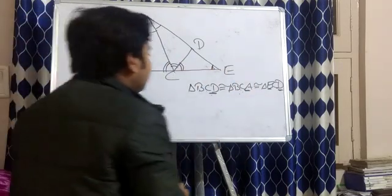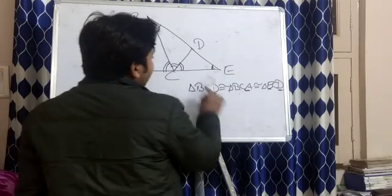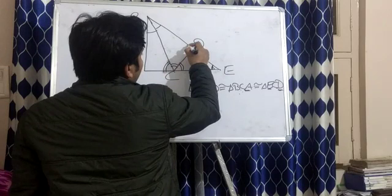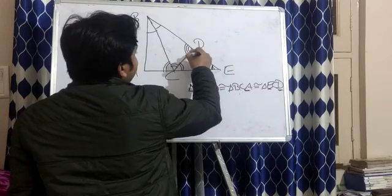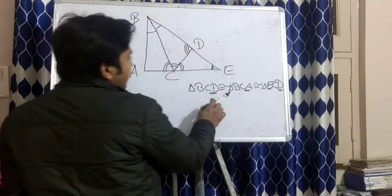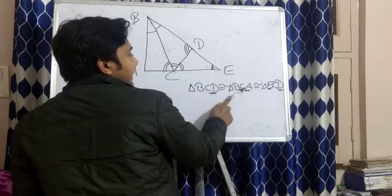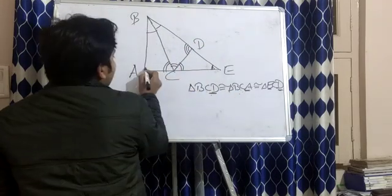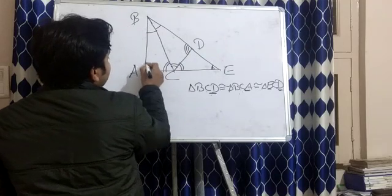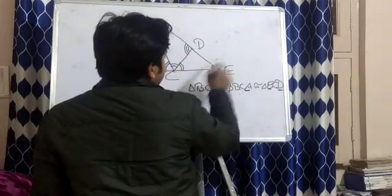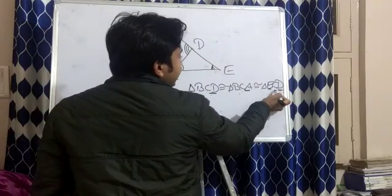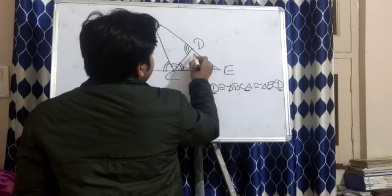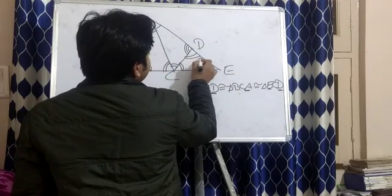Now for the third and last angle: in triangle BCD, angle D — which I am marking with a triple curve — will be equal to angle A in triangle BCA, marked with a triple curve. These two angles will be equal to angle D in triangle ECD. So all three triple-curve angles are equal.